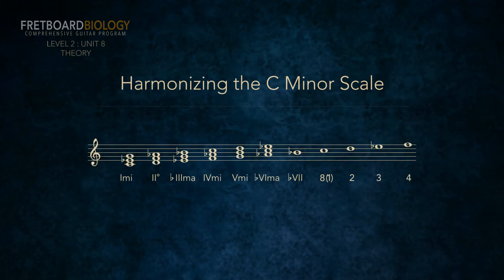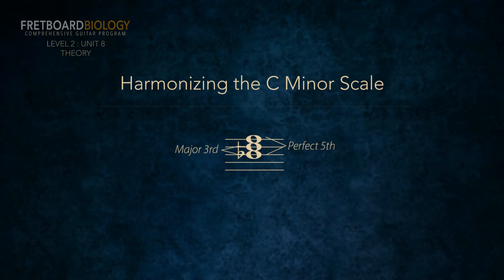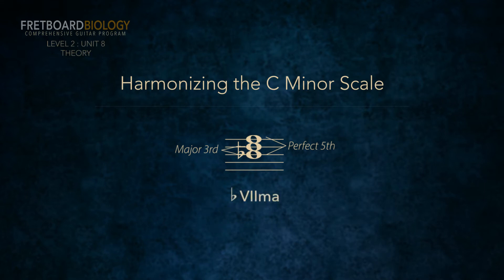Let's do the flat seventh chord. We start with the flat seventh scale degree, which is B flat. We find a note a third above B flat from the C minor scale. That note is a D, and we call this the third of the triad. Next, we find a note a fifth above B flat from the C minor scale. That note is an F, and we call this the fifth of the triad. D is a major third above B flat, and F is a perfect fifth above B flat. A triad with a major third and a perfect fifth is a major triad. Conclusion: the flat seven chord is major when we're in a minor key, and we label it flat seven MA.